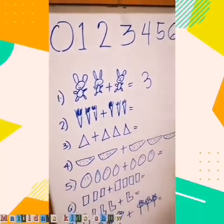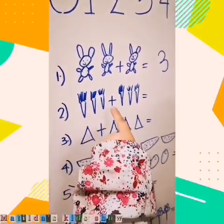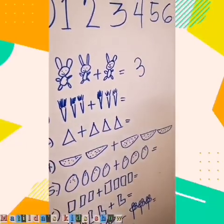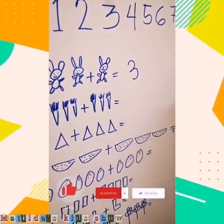Good. Number two. One, two, three, four, five, six. Okay. There is... there's six. Where's the number six? There.